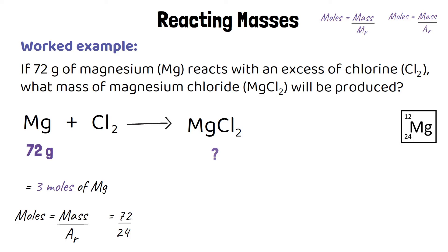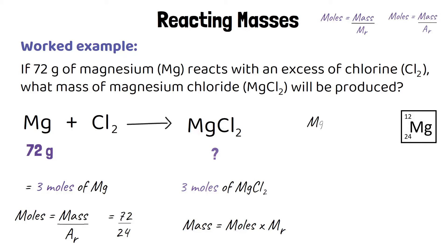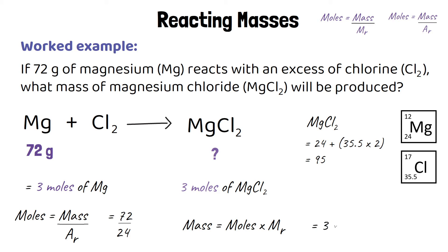We're starting with 3 moles of magnesium, which means we're going to make 3 moles of magnesium chloride. Once we know that, we convert back into a mass using the rearranged equation: mass equals moles times Mr. The number of moles is 3. The relative formula mass of magnesium chloride is 24 plus 2 lots of 35.5, which gives us 95. So 3 moles times 95 gives a mass of 285 grams. That means starting with 72 grams of magnesium, the maximum mass of magnesium chloride we'd be able to make is 285 grams.